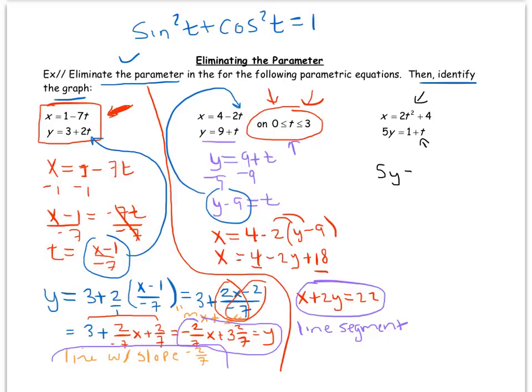So I'm going to solve the bottom one for t. That's easy - minus 1 from both sides and I get 5y minus 1 equals t.